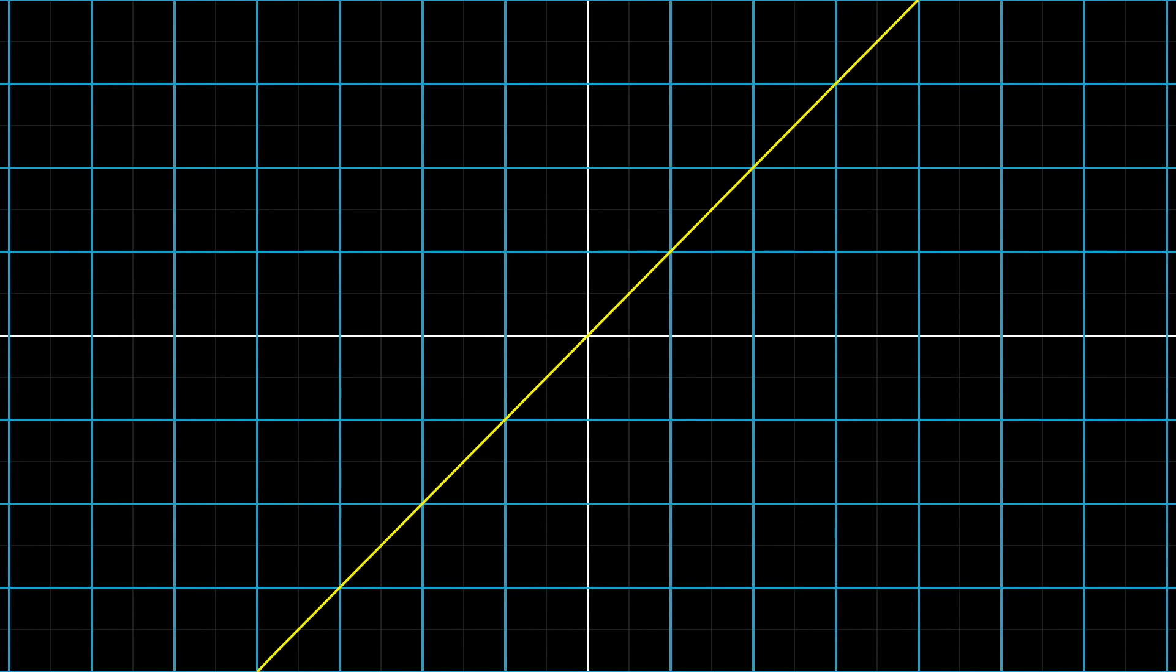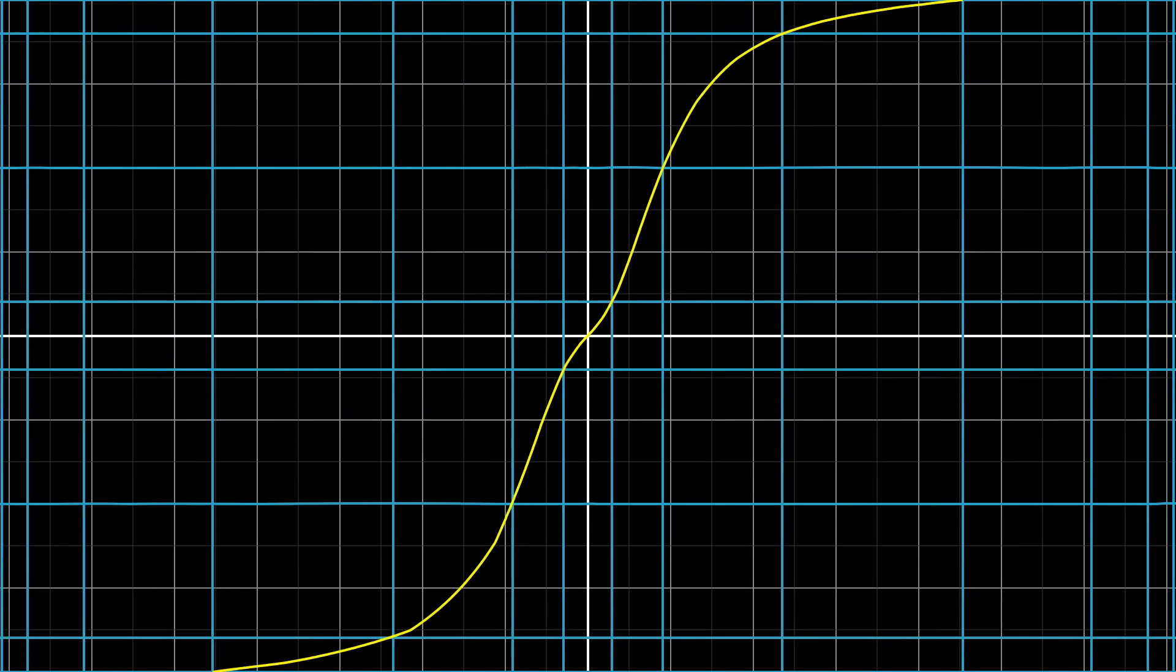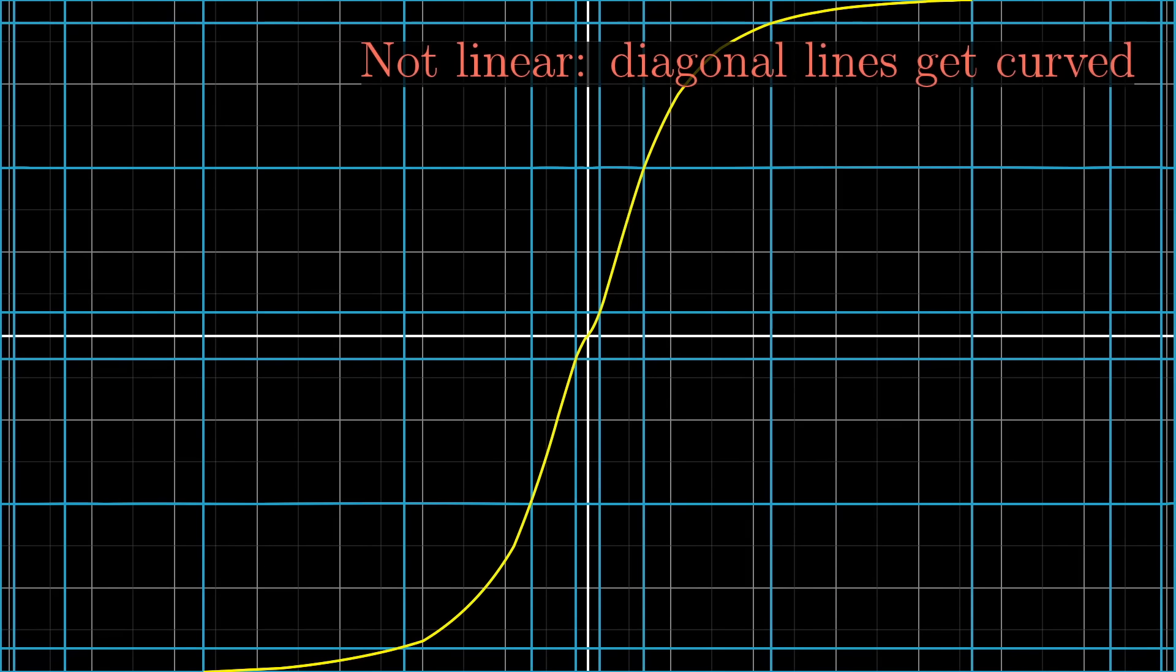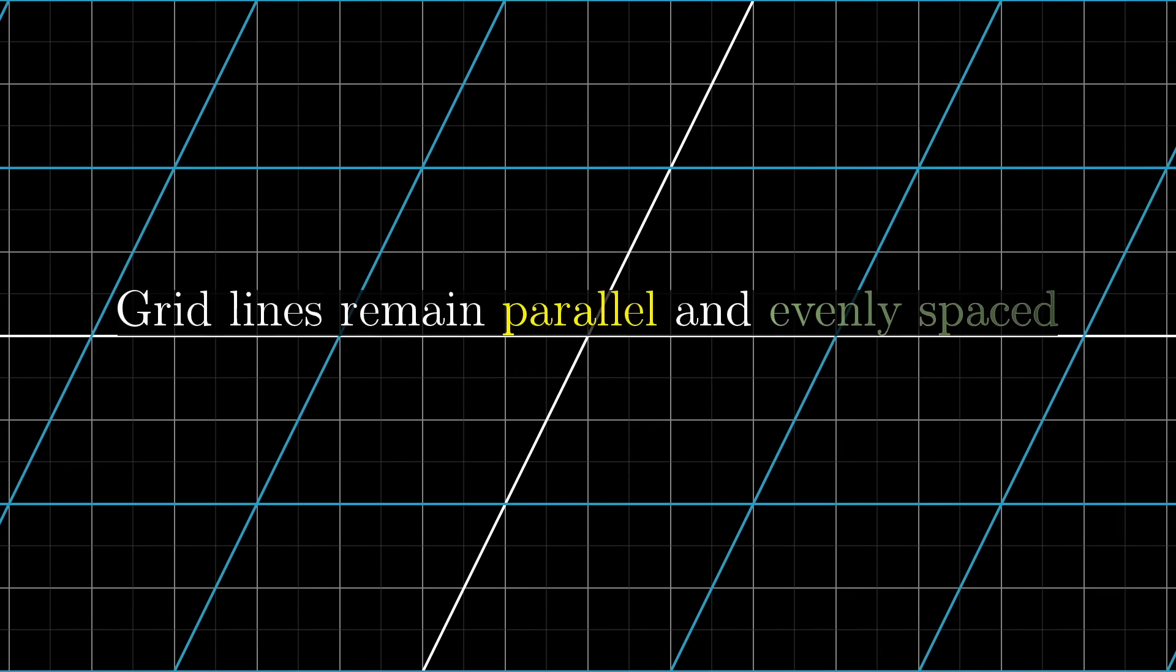This one here fixes the origin, and it might look like it keeps lines straight, but that's just because I'm only showing the horizontal and vertical gridlines. When you see what it does to a diagonal line, it becomes clear that it's not at all linear, since it turns that line all curvy. In general, you should think of linear transformations as keeping gridlines parallel and evenly spaced.